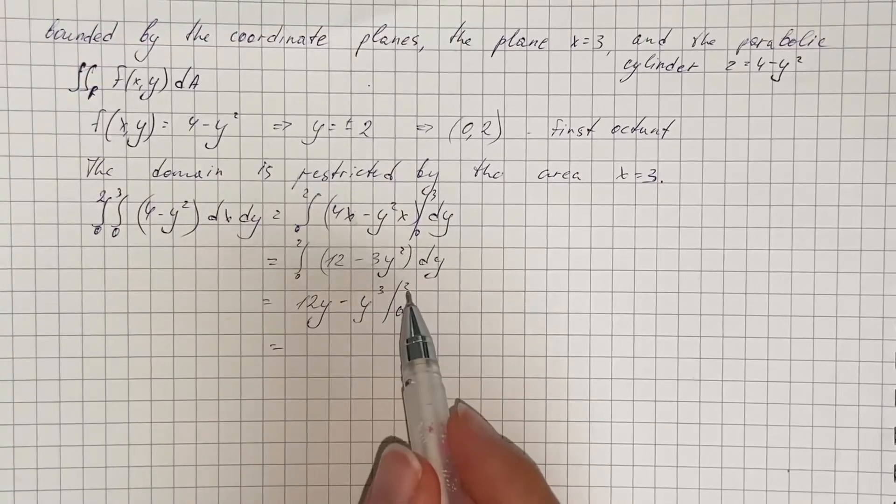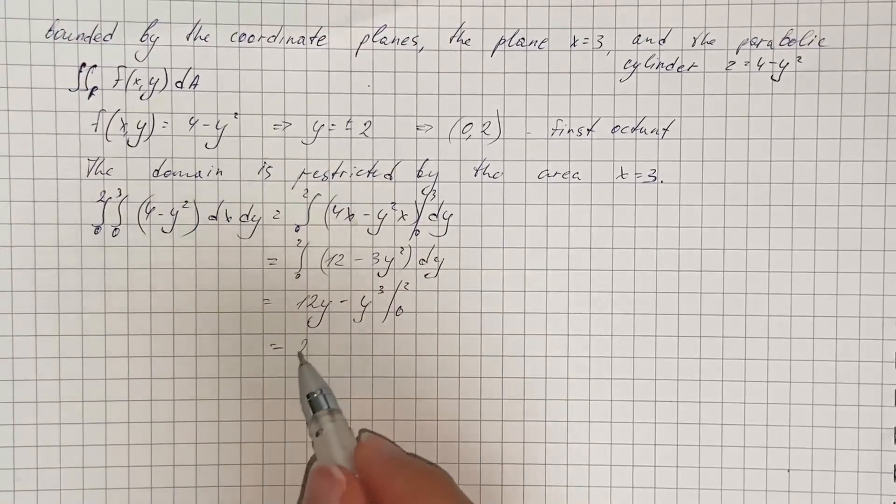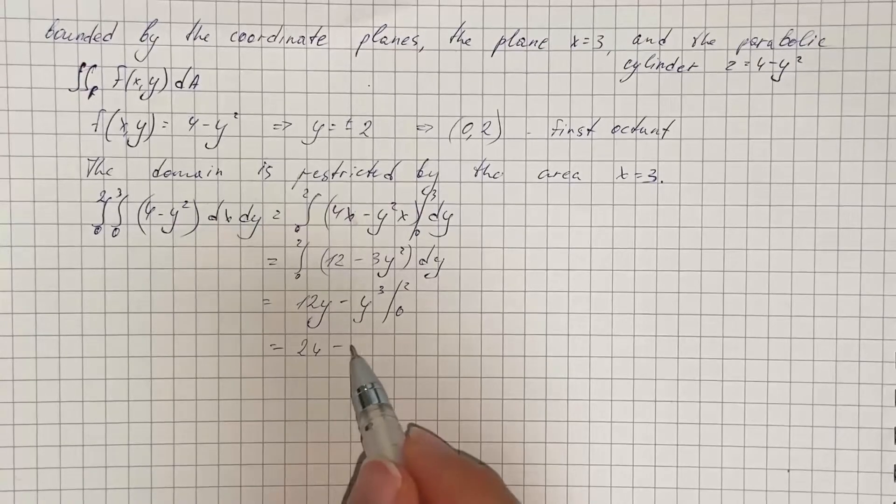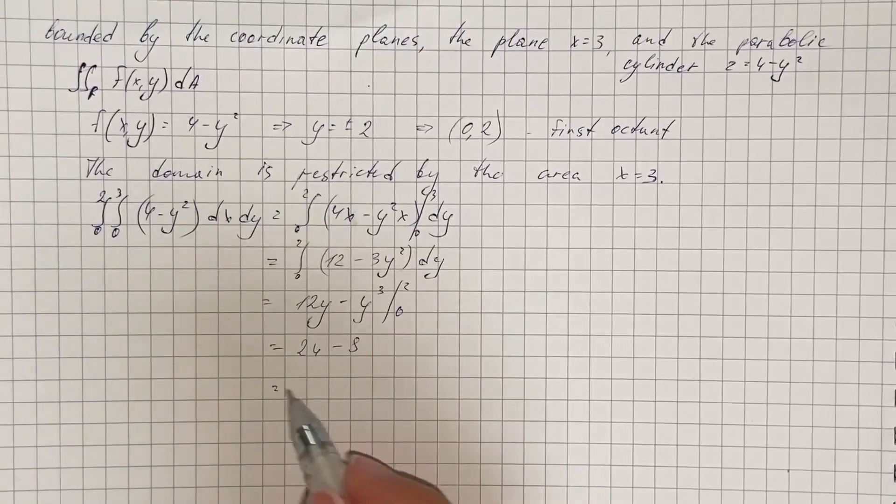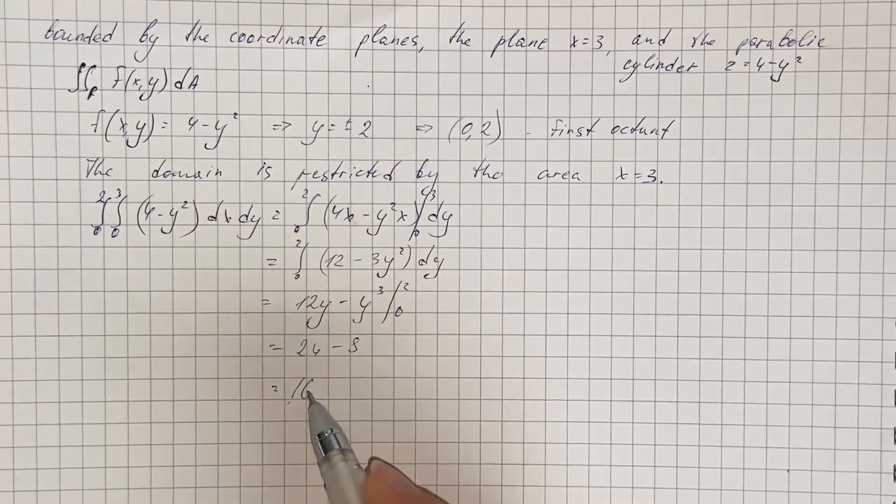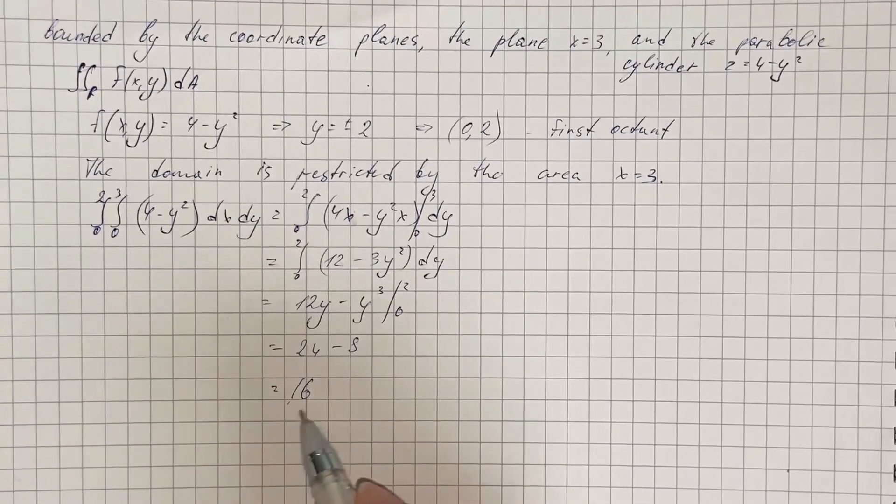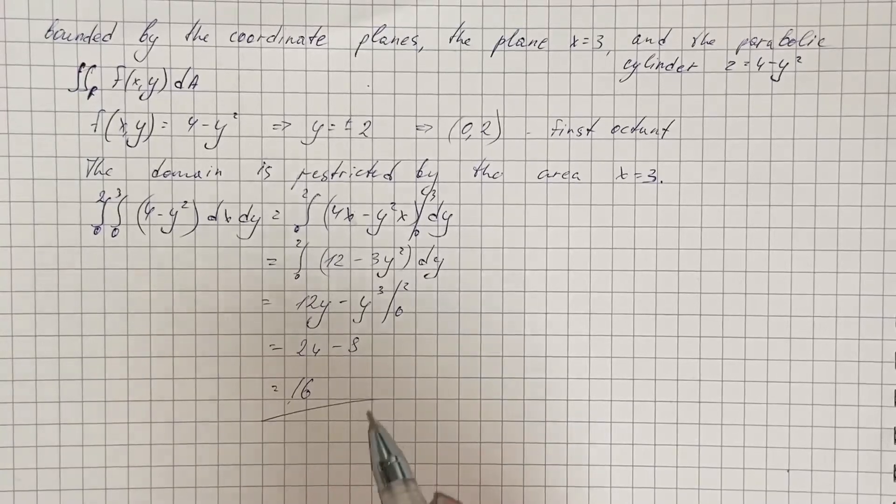So if we substitute 2 we get 24 minus 2 cubed, which is 8, and minus 0 plus 0. Therefore we get 16 and that's going to be our answer. So that's the volume of the solid.